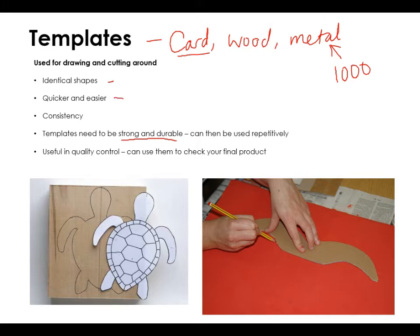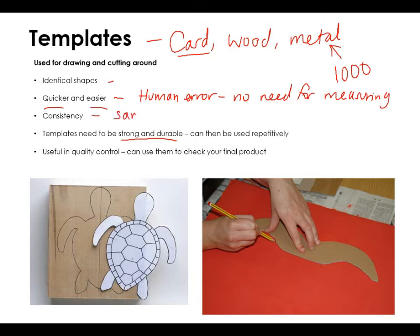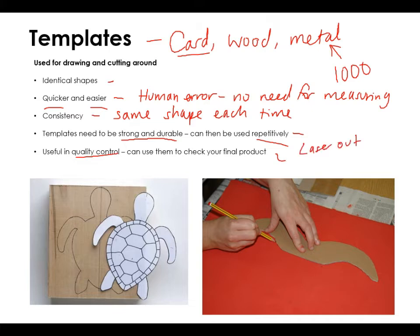It's much quicker and easier, so it gets rid of human error because there is no need for measuring, which can also be quite time consuming. You get a consistent, same shape each time. They need to be relatively strong and durable so that they can be used over and over. You can also use them in quality control. So templates are relatively simple — a shape you draw around — it speeds things up, gets rid of human error, makes everything quicker and easier, hence saving cash.